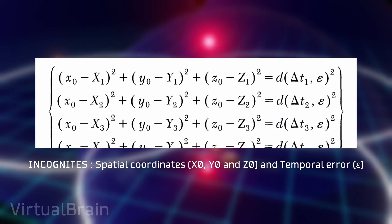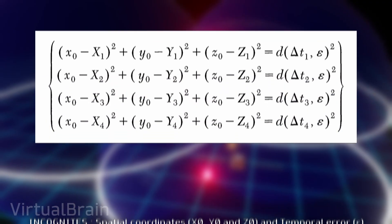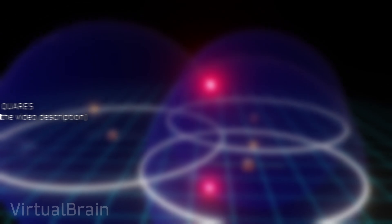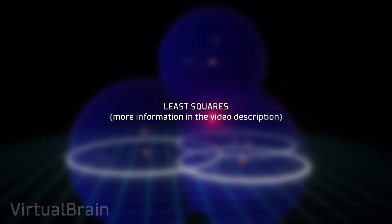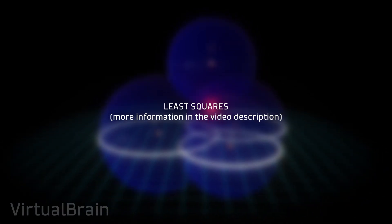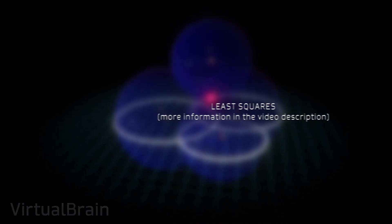Then, using the information from at least four satellites, it is possible to use the mathematical technique known as least squares, which, in a very simplified way, finds these unknowns by asking what values they should have in order for the equations describing the spheres to have the least possible error.